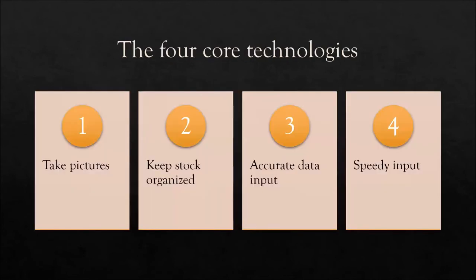The four basic technologies we're going to discuss are: how did we take pictures, how did we keep our stock organized - eventually over 100,000 books to organize on shelves - third, how we had accurate data input to avoid customer complaints about wrong books, and fourth, input that was quick. We never could get it fast enough to keep up with how fast we could buy books.